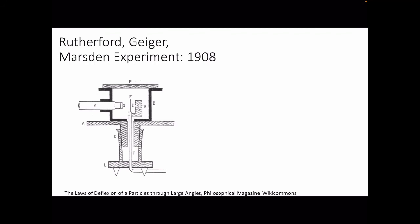Rutherford came to show what structure the atom would have. Before Rutherford, the plum cake model assumed charges are distributed throughout the atom. But by shooting alpha particles through gold foil, he saw most pass through while few are reflected back at large angles. This showed the charge is not distributed — there is a lot of void in an atom and the charge is concentrated in specific places.